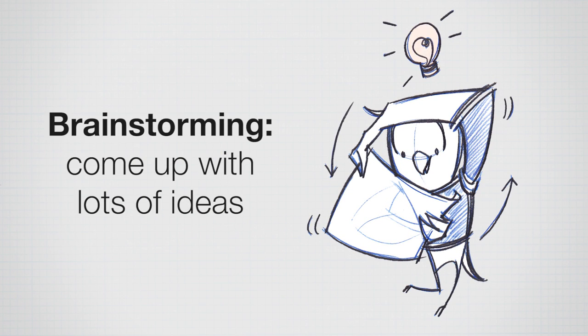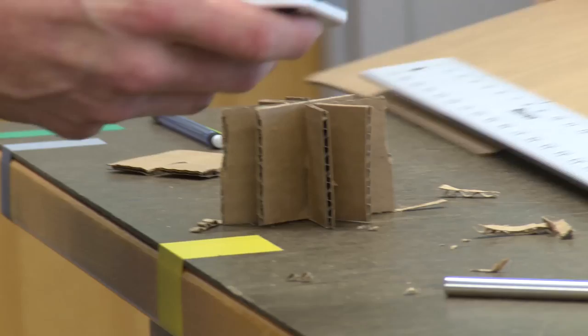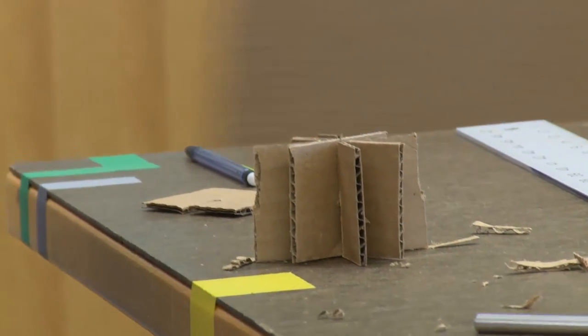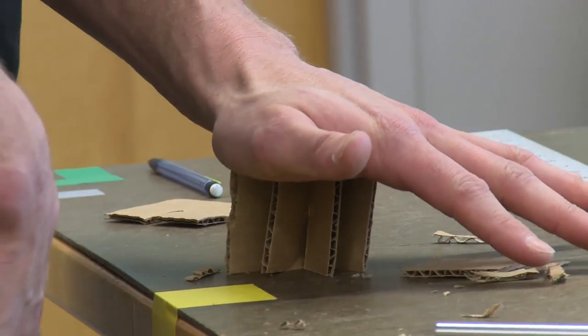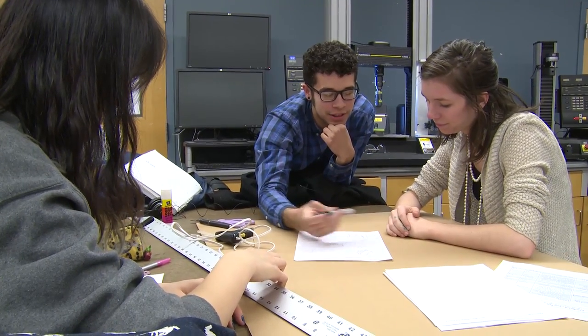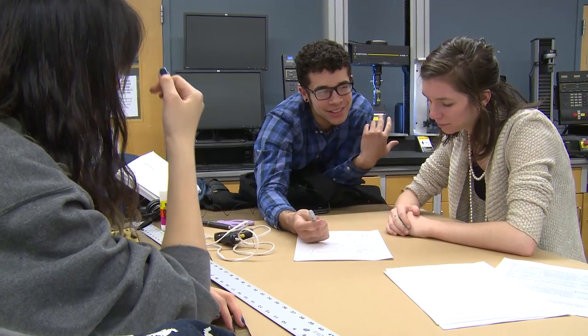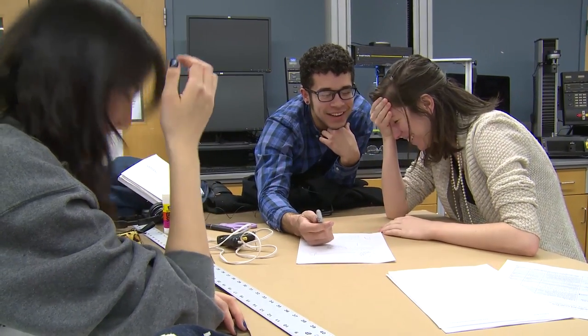Brainstorming would be the next step, and you want to come up with lots of ideas — including crazy ones. You can list ideas, sketch ideas, or even build some little prototypes in the brainstorming phase. You can do brainstorming alone, but it's also good to do it in a group. If you do brainstorm in a group, be positive about all ideas, encourage craziness, and don't judge them. In the brainstorming phase, you just want to generate a huge list of ideas.